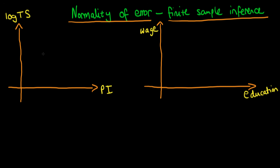On the left hand side here we have a graph of the log of an individual's test score against their parental income. We might think that as parental income increases, the average test score an individual might achieve tends to increase on average. Note that because we've taken a log of test scores, this y-axis variable is no longer bounded at zero — in fact it can go all the way to minus infinity, even though test score itself is bounded at zero.